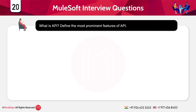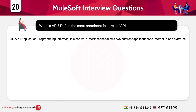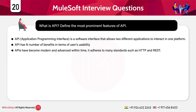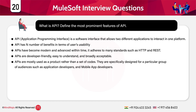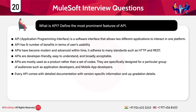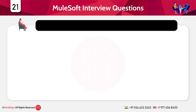What is an API and what are its most prominent features? API stands for Application Programming Interface. It is a software interface that allows two different applications to interact on one platform. APIs have become modern and advanced, adhering to standards such as HTTP and REST. APIs are developer-friendly, easy to understand, and broadly acceptable. They are mostly used as a product rather than a set of codes, designed for specific audiences like application developers and mobile app developers. Every API comes with detailed documentation, version-specific information, and upgrade details. APIs are highly secured application interfaces that allow operation within a robust environment.